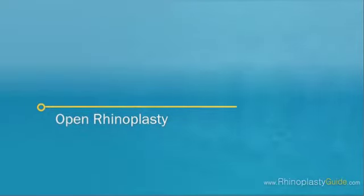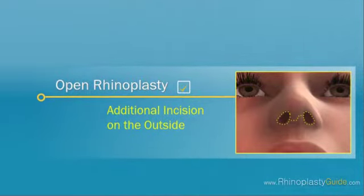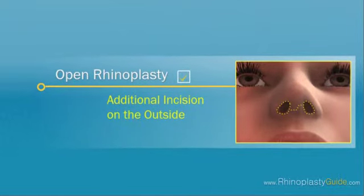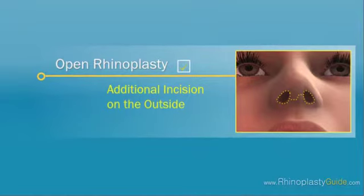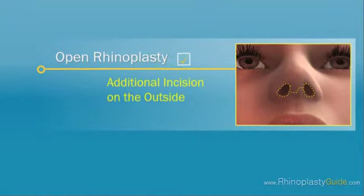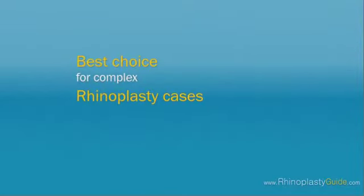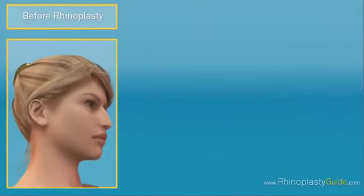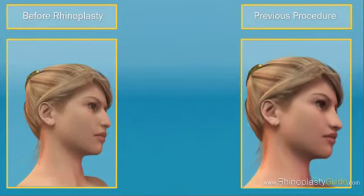Open rhinoplasty uses an additional incision on the outside of the nose, in the tissue that separates the nostrils, which enables the surgeon to peel back the skin of the nose and expose the interior structure for alterations. This may be the best choice for complex rhinoplasty cases, as it provides the surgeon with better visibility and access to the interior of the nose.